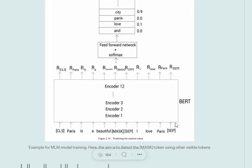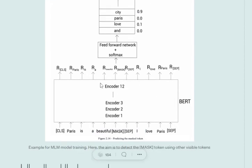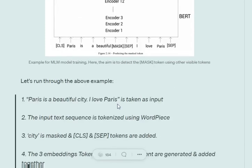In BERT base we have 12 encoder blocks with multiple layers that repeat. So here we have Encoder 1, Encoder 2, Encoder 3 representing those particular blocks. Once the input passes through BERT, we get certain embeddings for each of the tokens. We know what the position is for the mask token. Eventually we apply a feed-forward network plus softmax to get the probability for all the possible tokens - we are applying the softmax activation function plus feed-forward network, and eventually we get the probability for the most apt token that should replace the masking.